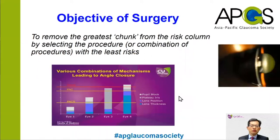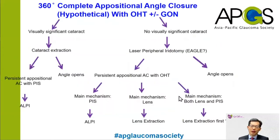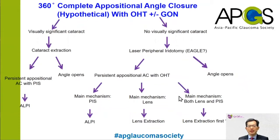The objective of initial surgery is to remove the greatest chunk or height from the risk column by selecting a procedure or a combination of procedures with the least risk for that particular patient. In the next two slides, I'll present two hypothetical situations — two extreme scenarios — and go through step by step the decision making.